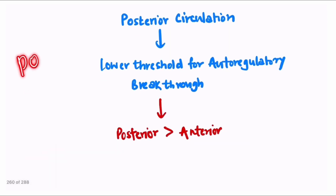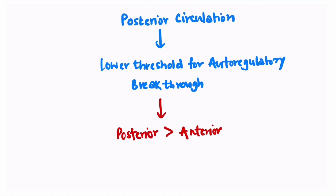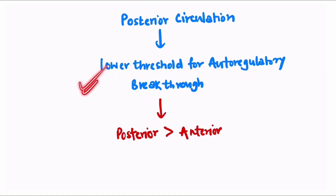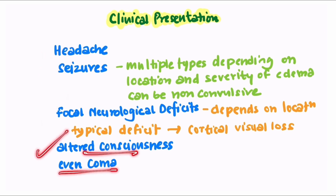The word 'posterior' is in the name of PRESS syndrome because it involves the posterior circulation more. This is because there is a lower threshold of autoregulatory breakthrough in the posterior circulation, making it more involved than the anterior circulation. Patients can present with headache, seizures, focal neurological deficit, altered consciousness, and even coma.